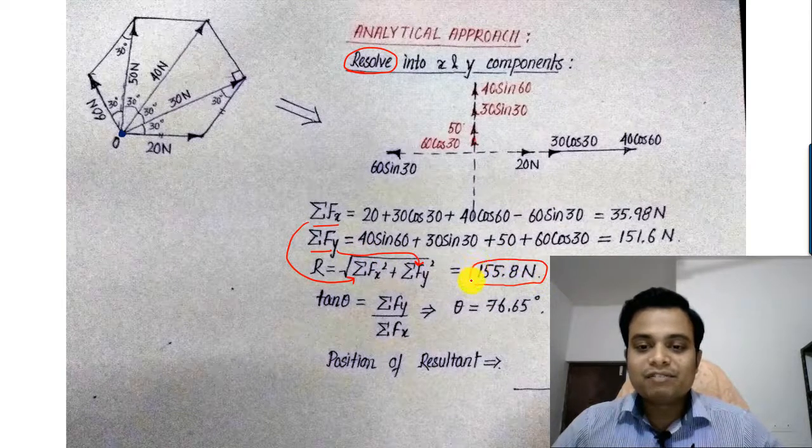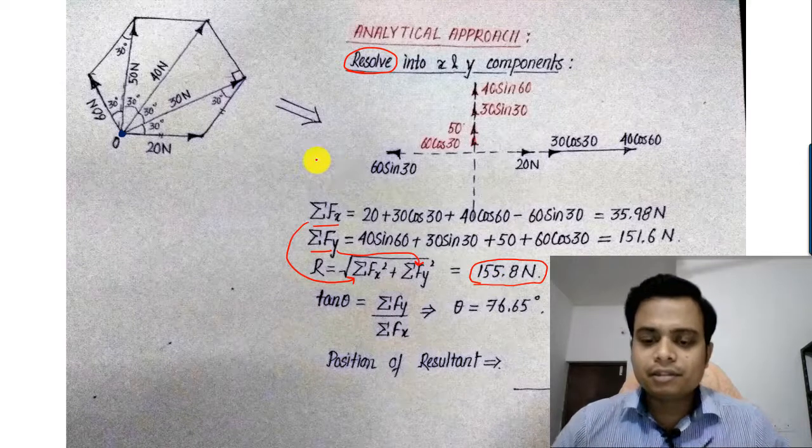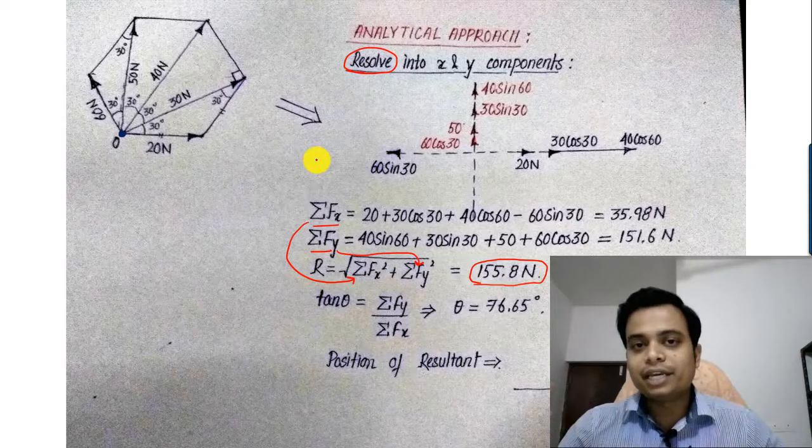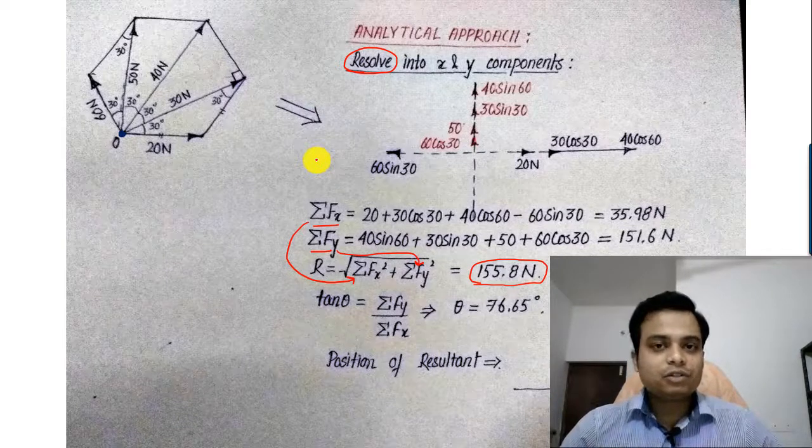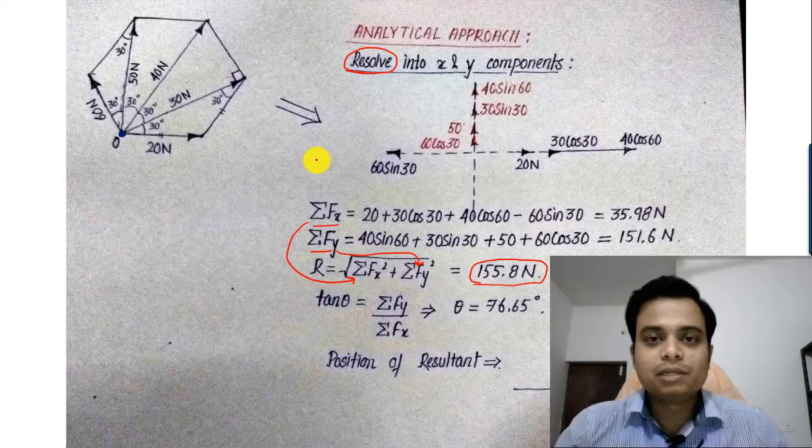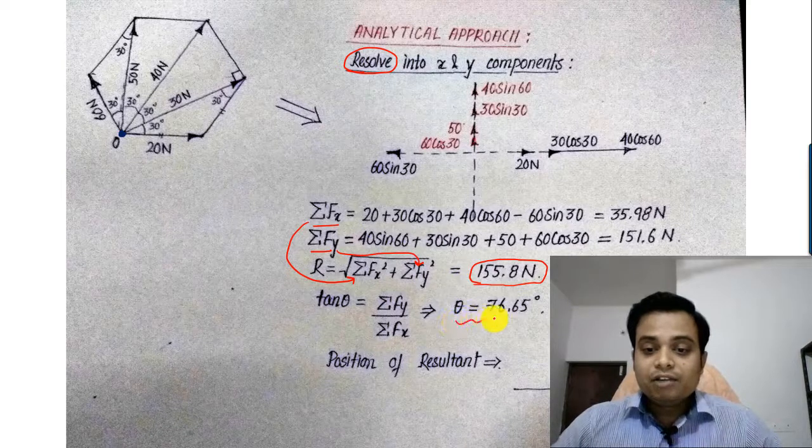We are pretty much close. In the graphical approach we've got a value of 155. In the analytical approach we've got a value of 155.8. You can clearly see that there is a difference of 0.8 Newtons, which is pretty much negligible.